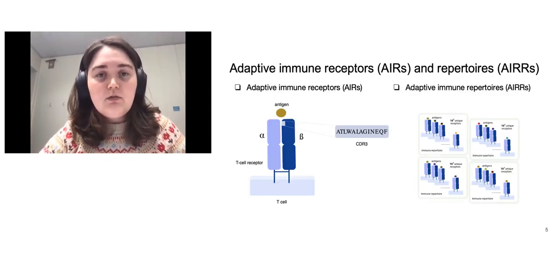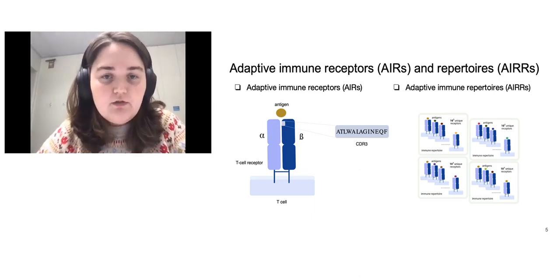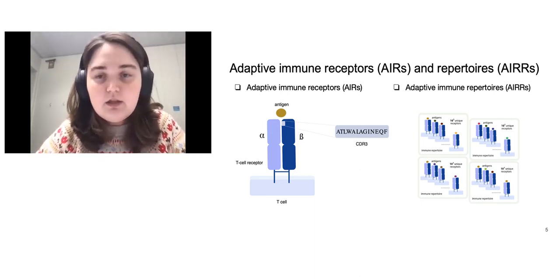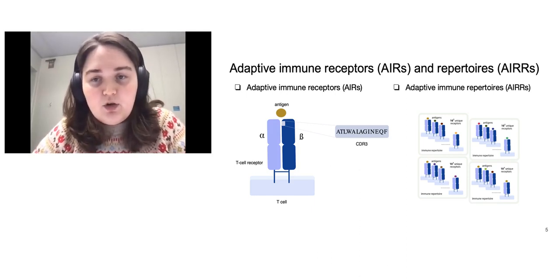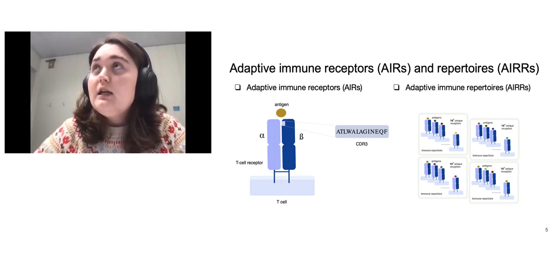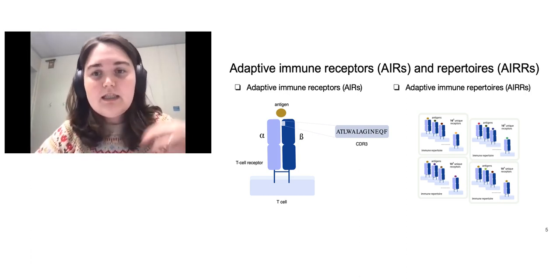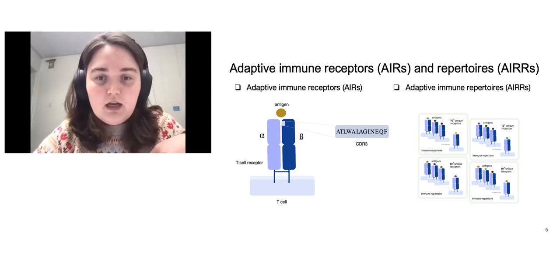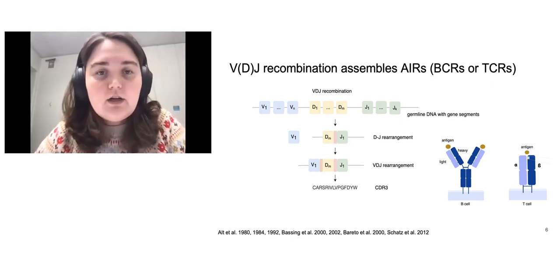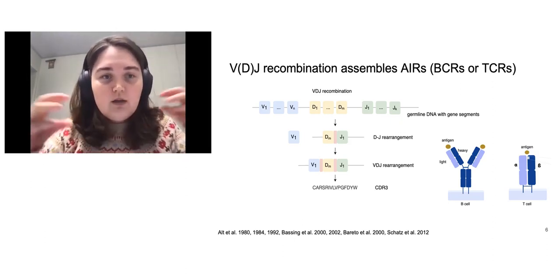We will talk both about the receptors and repertoires. Immune receptors — BCRs and TCRs — are one of the key agents of adaptive immune systems and can recognize different antigens. One of the most important regions for antigen recognition is the CDR3 region, the most variable region. An adaptive immune repertoire is a set of different immune receptors within one individual, and it records all past and present immune events such as diseases and vaccinations.